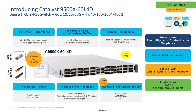The 9500X-60L4D is a 1RU form factor box, but in spite of being 1RU we have jam-packed it with interfaces. We have an extremely high port density with 60 ports that can operate at speeds of 10, 25, and 50 Gig — those are your SFP form factor ports — and in addition, four QSFP-DD form factor ports that can operate at speeds of 40, 100, 200, and 400 Gig.